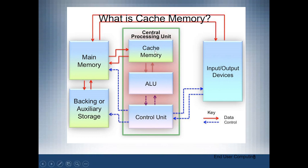Cache memory is always found within the processor. Cache memory is closer to the processor compared to the main memory, which is a little bit far from the processor. So when the processor is fetching instructions, it is going to first check the cache memory for the available instruction before it checks from the main memory. Cache memory offers a convenient platform where the processor can quickly access those particular instructions that it needs to process.